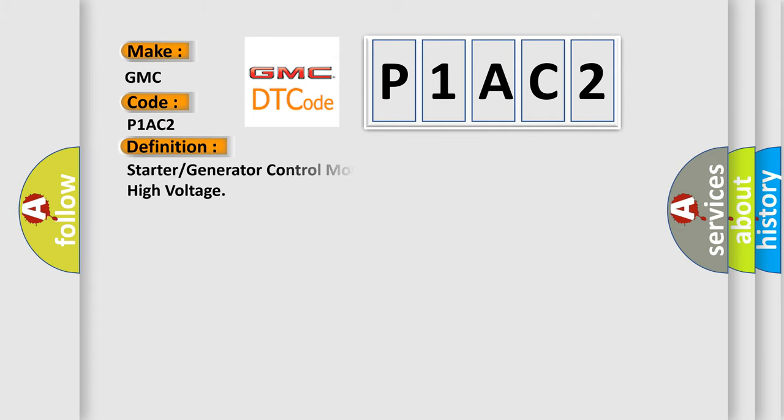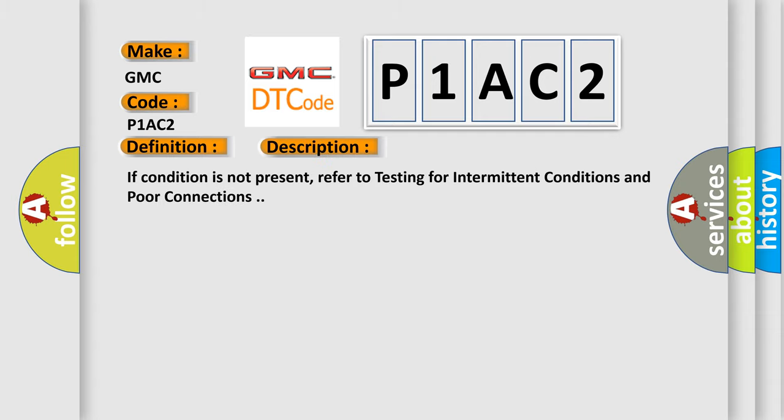The basic definition is: starter or generator control module cooling fan relay control circuit high voltage. And now this is a short description of this DTC code. If condition is not present, refer to testing for intermittent conditions and poor connections.